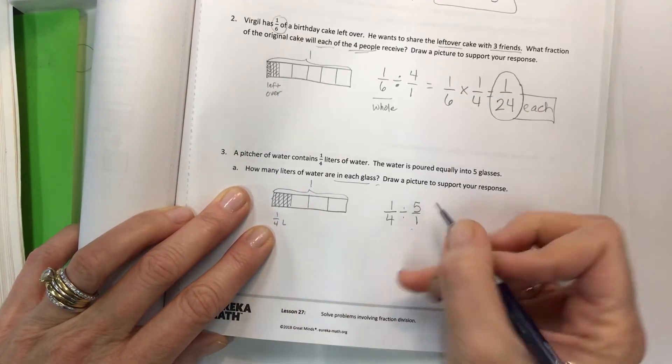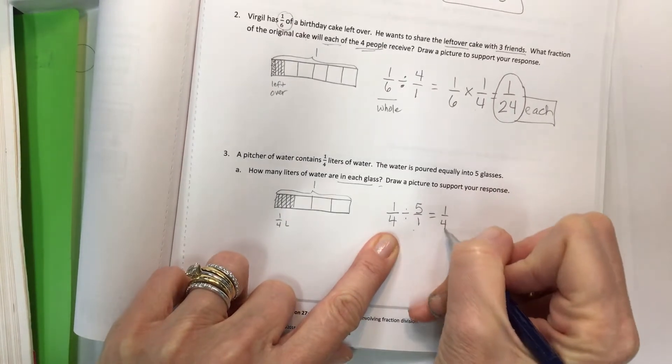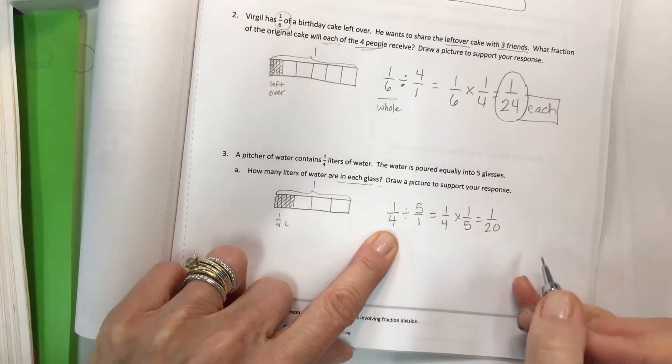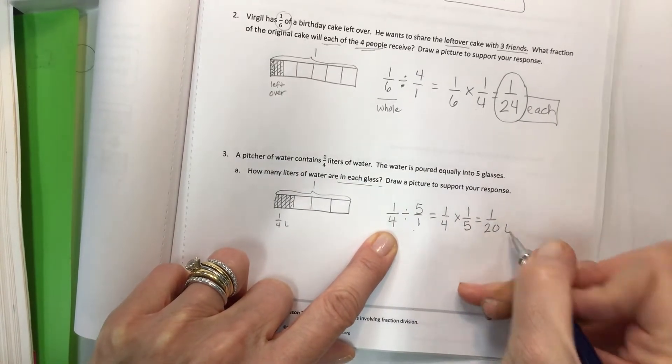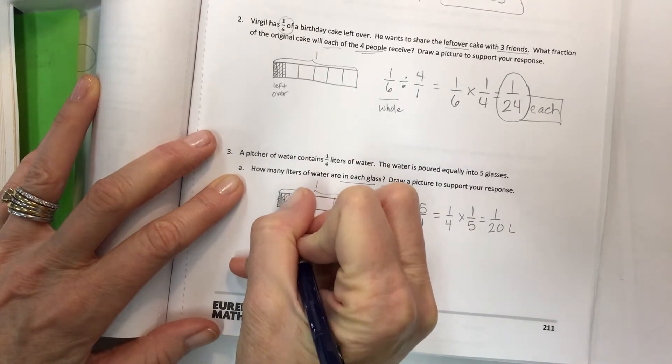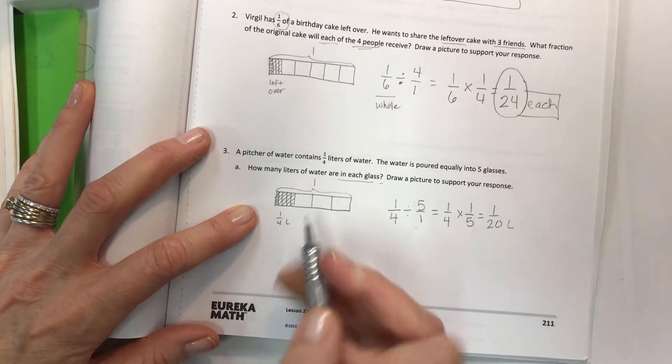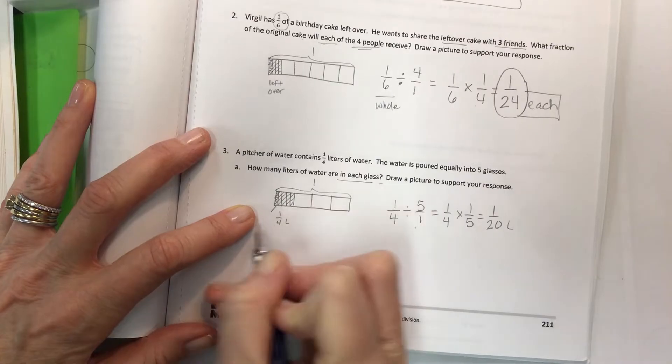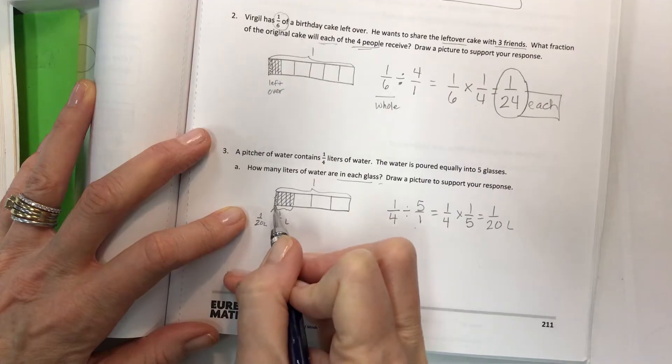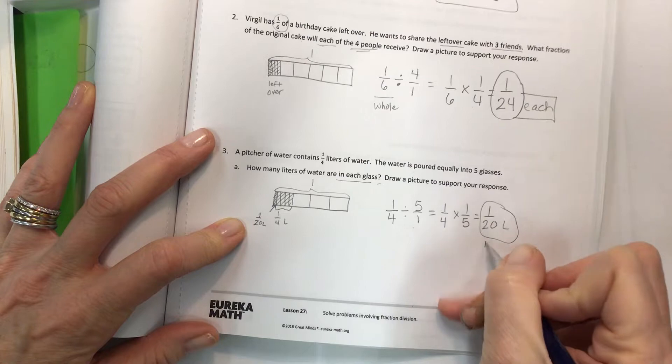So what I have is being shared into these five glasses. One, two, three, four, five. This is the picture that supports this expression. Now that you've written it, keep, change, flip, multiply. So it's one-twentieth of a liter that each glass will get. So your double shading is going to be in that one little end piece there. So that is one-twentieth of a liter. So the whole thing is one-fourth, but that one little piece is your one-twentieth in each glass.